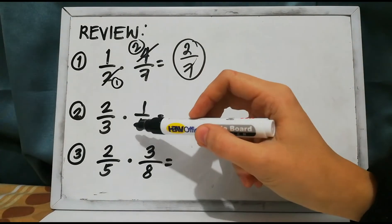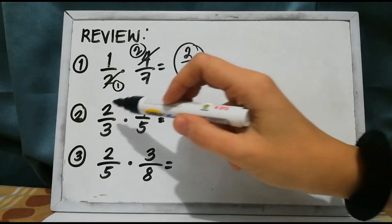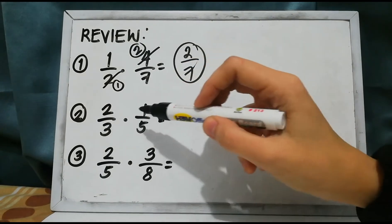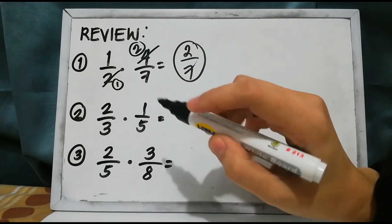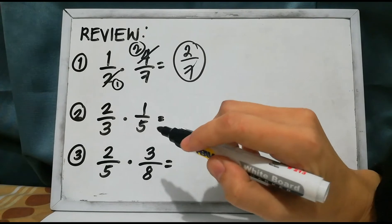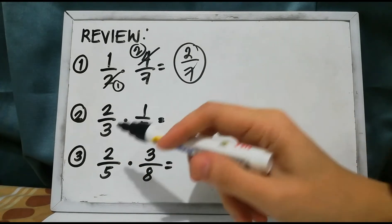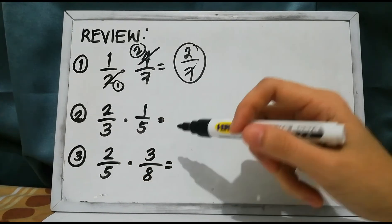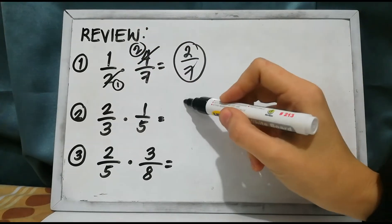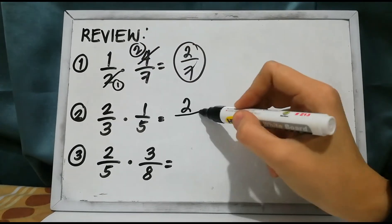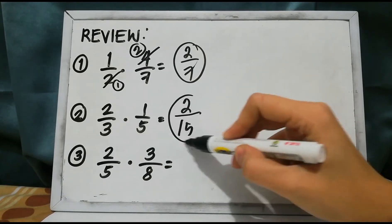Next, we have two thirds times one fifth. As you can see, all of these numbers are prime, so we don't have a common factor. All you have to do is multiply the numerators and the denominators to get the product. So 2 times 1 is 2, over 3 times 5 is 15.